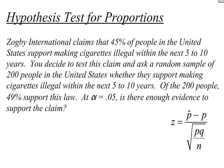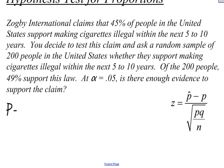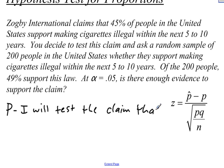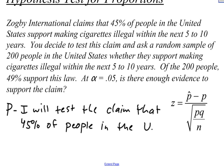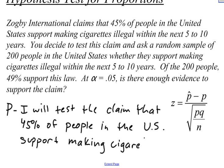As I go through PHANTOMS, the first thing I write down is P, which stands for your parameter statement. This is a statement about the claim. I will test the claim that 45% of people in the U.S. support making cigarettes illegal. We write this at the beginning because we want to know what we're trying to test, and at the very end, we will say whether our evidence supports or does not support this claim.